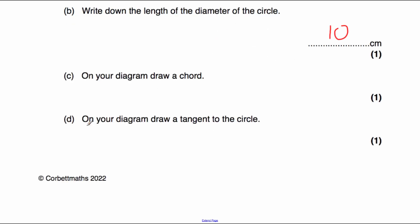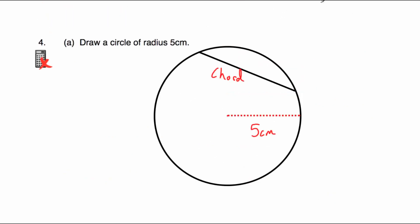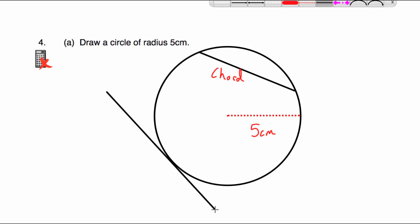In part D, we've been asked to draw a tangent to the circle. Remember, a tangent is a line that touches a circle once and carries on. Using a ruler and pencil, we draw our tangent — it could be at the bottom, at the side, anywhere. As you can see, the tangent just touches the circle once and carries on. That is our tangent.